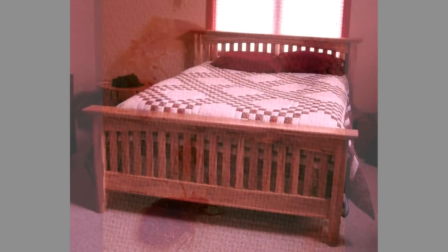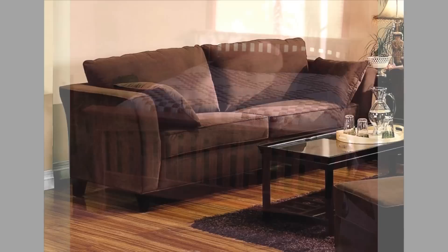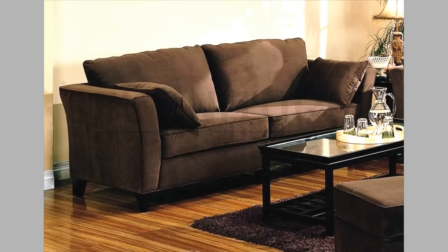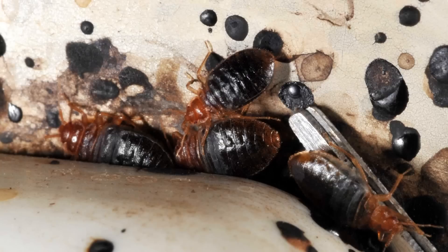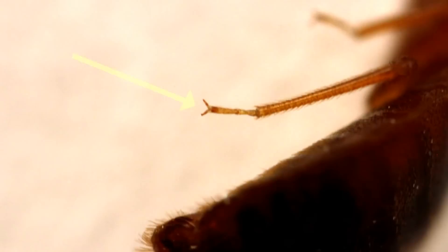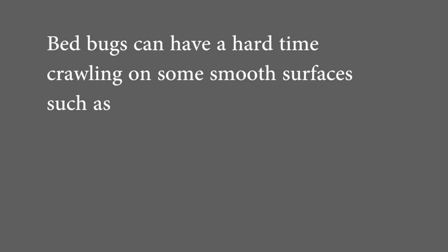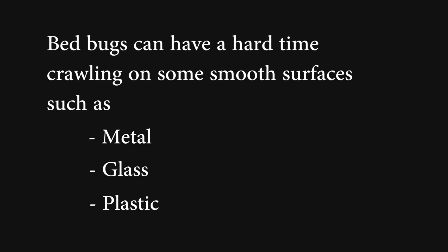Bedbugs prefer to live close to their food source in areas where they are not likely to be seen or disturbed, and are usually distributed on or around beds or sofas where people spend long periods of time. They also prefer to live in cracks or crevices or along edges that offer protection. Bedbugs have clawed feet, which makes it difficult for them to crawl on some smooth, hard surfaces such as metal, glass, and plastic. Therefore, they tend to walk on surfaces of texture that will enable them to get around easier.